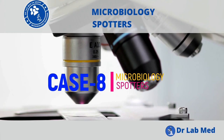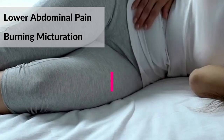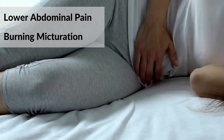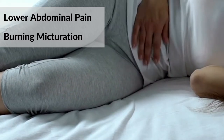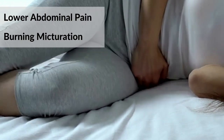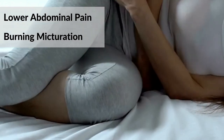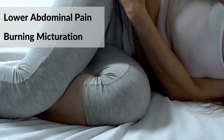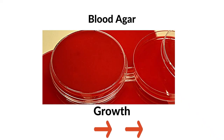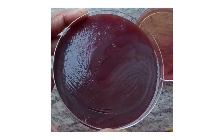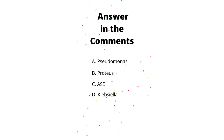Coming to the next clinical case: a 35-year-old woman suffering from lower abdominal pain and burning micturition. On blood agar, this growth is seen — identify the probable organism. These were the options.